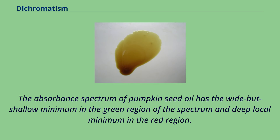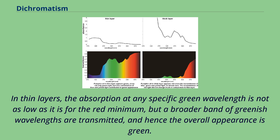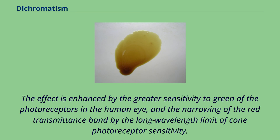The absorption spectrum of pumpkin seed oil has the wide but shallow minimum in the green region of the spectrum and a deep local minimum in the red region. In thin layers, the absorption at any specific green wavelength is not as low as it is for the red minimum, but a broader band of greenish wavelengths are transmitted, and hence the overall appearance is green. This effect is enhanced by the greater sensitivity to green of the photoreceptors in the human eye, and the narrowing of the red transmittance band by the long wavelength limit of cone photoreceptor sensitivity.